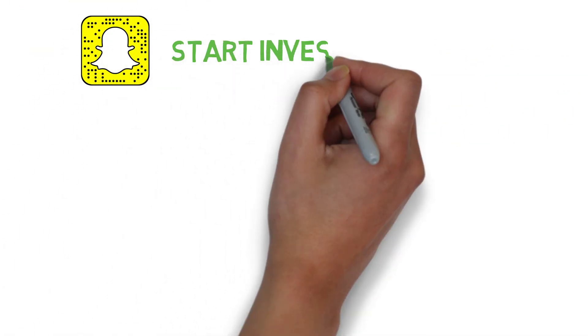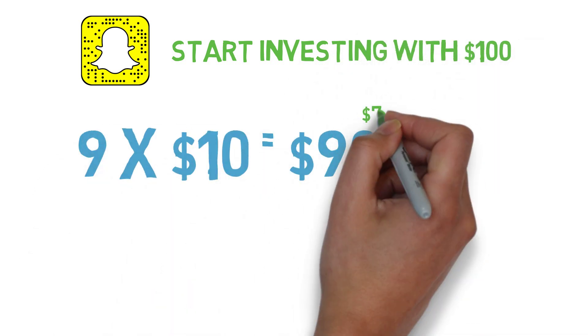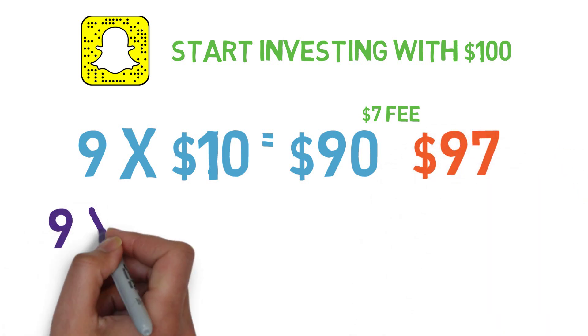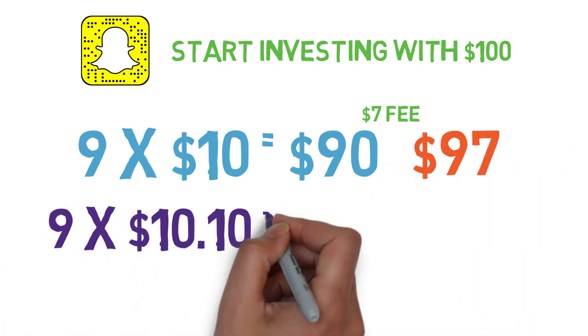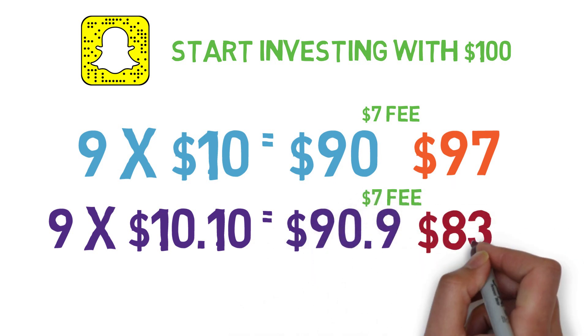Let's look at the other side of starting with little money. If you started with only $100, let's say you bought 9 shares of Snapchat at $10 a share. After a fee of $7, it'll cost you $97 to buy those stocks. Two weeks later, the stock is up 1% at $10.10 and you decide to sell it because you stopped using Snapchat.